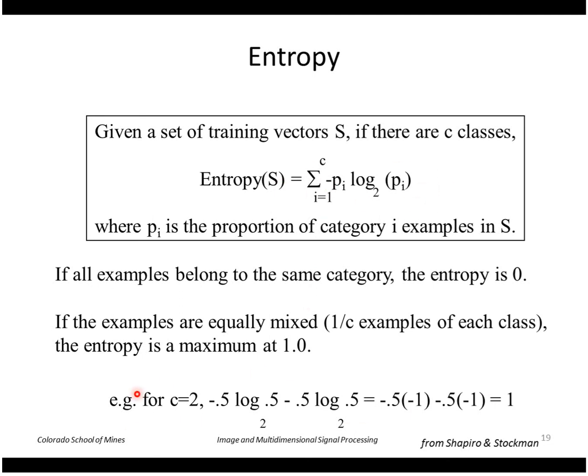Here's an example of two classes, maybe a coin flipping problem where each P is 0.5. So we're adding up these two values and we get a one. So we want to maximize entropy, meaning that we want to split out the samples among the different dimensions equally.